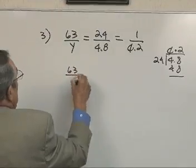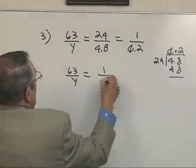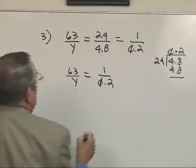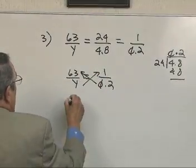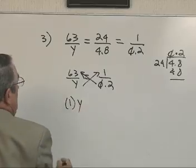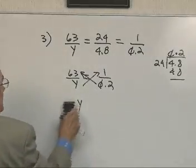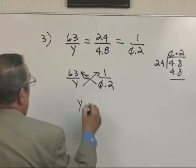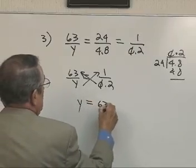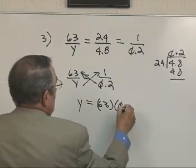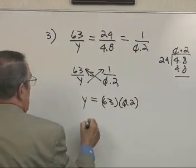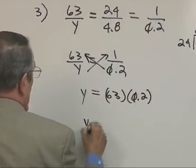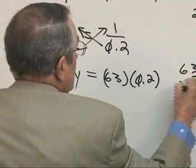All right, so 63y is equal to 1 over 0.2. Now when I cross multiply I really get 1y, right? But since it's 1 we don't have to write it, just leave the y, and that's equal to 63 by 0.2. Now you recall when we multiply you can take the numbers themselves, so y is equal to 63 times 2 is 126.